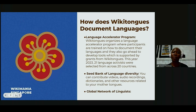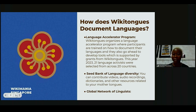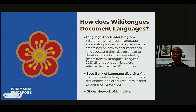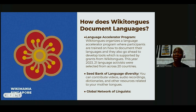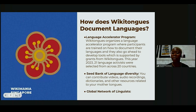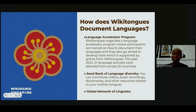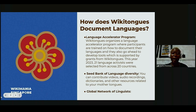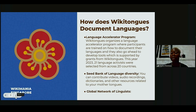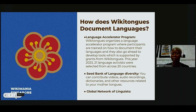Wikithongs organizes a Language Accelerator Program — since 2022 it has been running this program. We started with 10 participants; this year we have 21 people in the program. These linguists and activists do a whole lot of things for their communities to preserve their languages. Some languages they work on have around 2,000 to 7,000 living speakers. Participants come from different parts of the world — Africa, Asia, Europe, Australia — and this year the selection was made across 20 different countries.